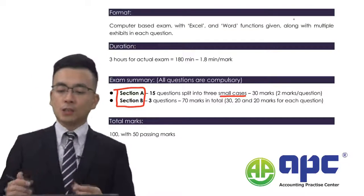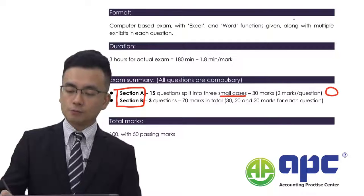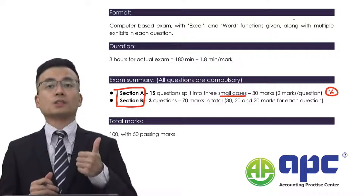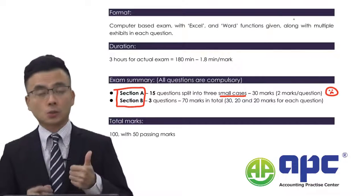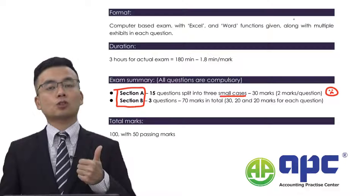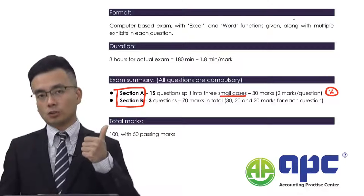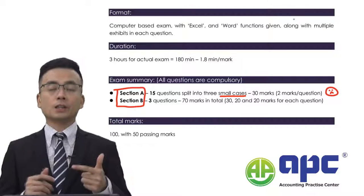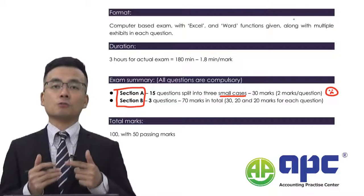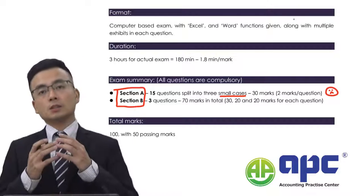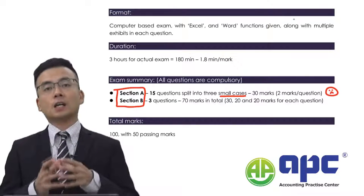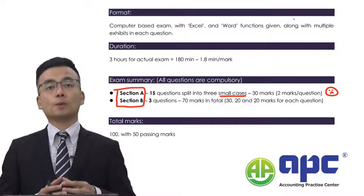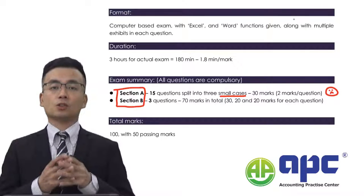Section A is quite tough, because if you are not familiar with the ISA — the International Standards on Auditing — it's quite a challenging paper. And if you are not sure about the ACCA Code of Ethics, it's highly unlikely that you will get the questions right in Section A. Make sure that you dip further into each of the standards and practice enough multiple-choice questions so you can pass Section A.